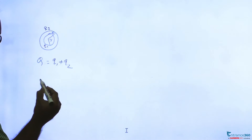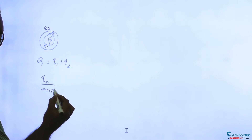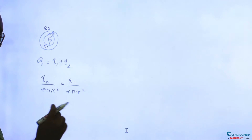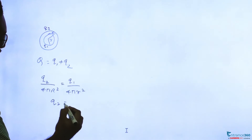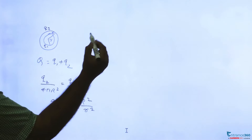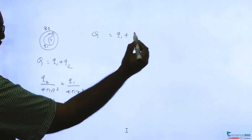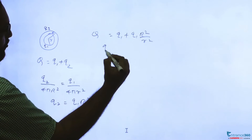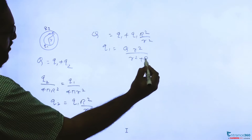Since the charge densities are equal, we can say Q2 by 4πR² will be equal to Q1 by 4πr². From here, Q2 equals Q1 times R² by r². Now let's write Q2 and Q1 in terms of Q. So Q1 plus Q2 can be written using the relation, and from here Q1 will be Q times r² by (r² + R²).